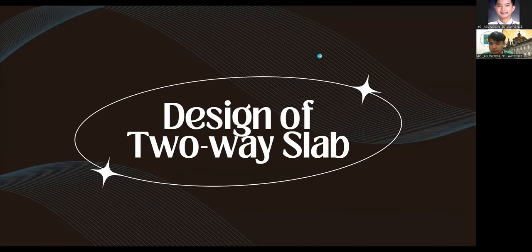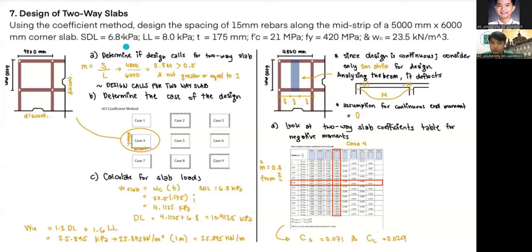Our next problem is in regards to design of two-way slab. Using the coefficient method, design the spacing of 15mm rebars along the mid-strip of a 5,000mm and 6,000mm corner slab. The superimposed dead load is 6.8 kPa and the live load is 8.0 kPa. The thickness is 175mm, f'c is 21 MPa, fy equals 420 MPa, and the unit weight of concrete is 23.5 kN/m³.